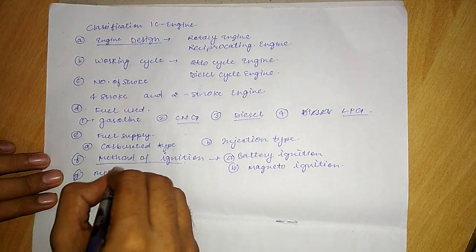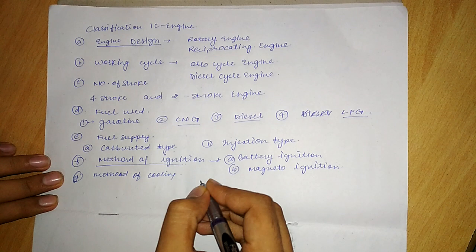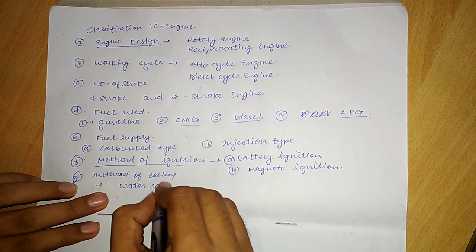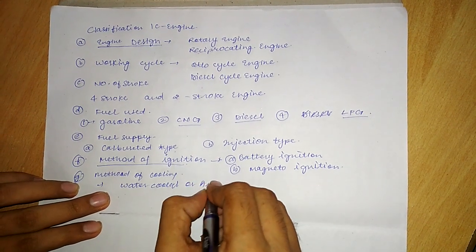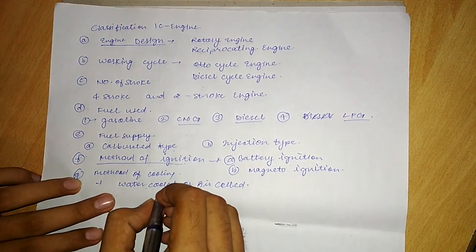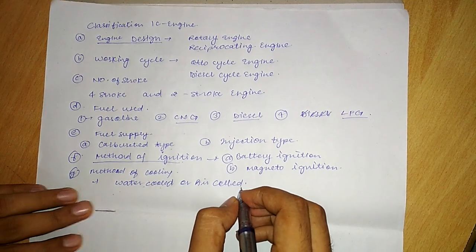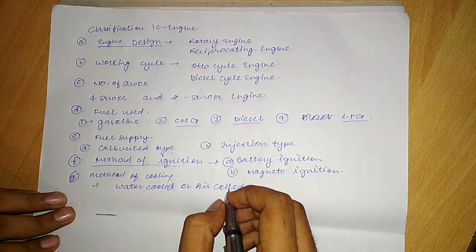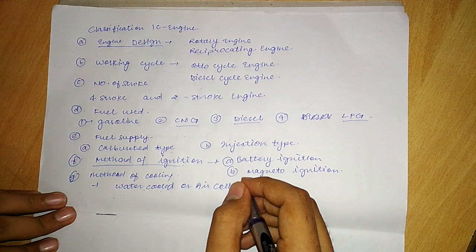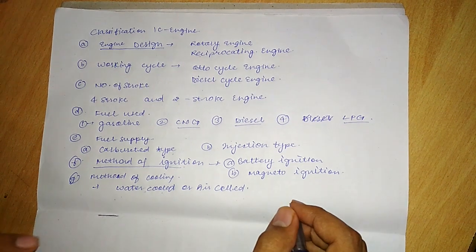The other classification is on the basis of method of cooling — that is water-cooled or air-cooled engines. These are of two types: the water-cooled type and the air-cooled type. Generally these IC engines are used in automotive engines, marine engines, aircraft engines, and industrial engines.